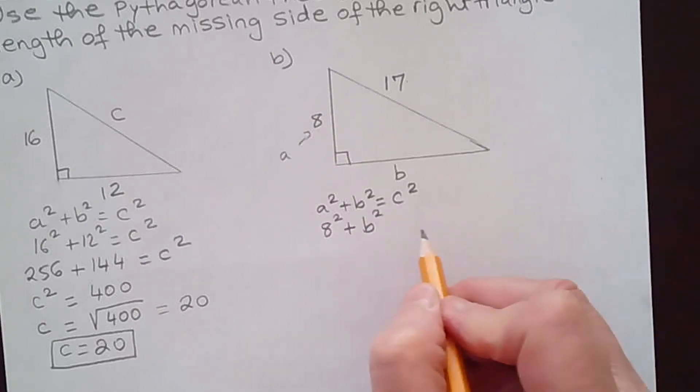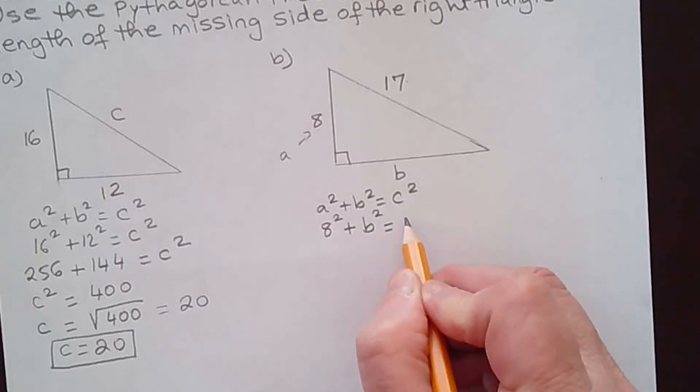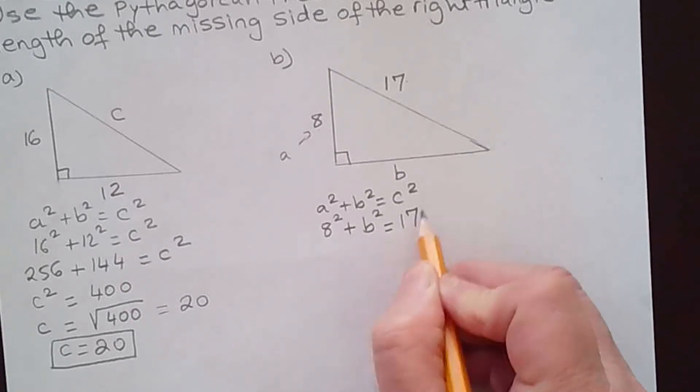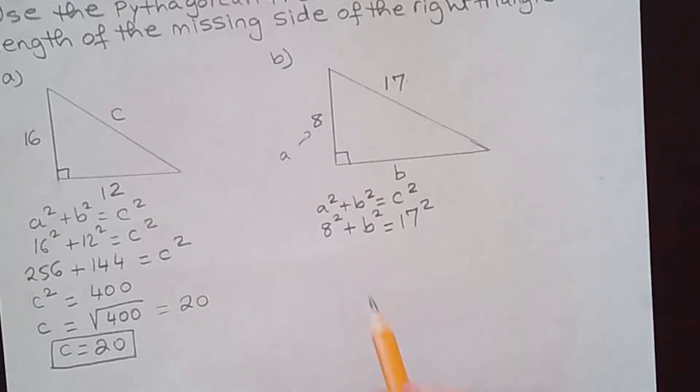a is 8, so you have 8² + b² (that's what I'm solving for) equals c², which is 17². Now you can use your calculator. 8² is 64. You don't need a calculator for that one. Plus b². And 17² is 289.